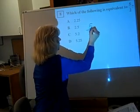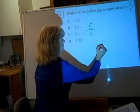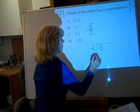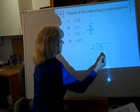The fraction bar means divided by, 5 divided by 2. So we can say 5 divided by 2 and just carry out this division and we'll have a decimal number.